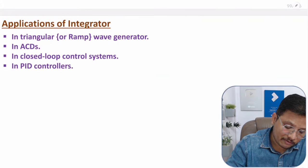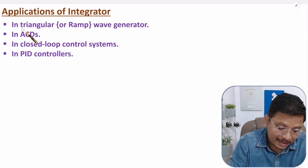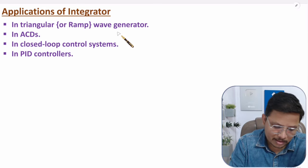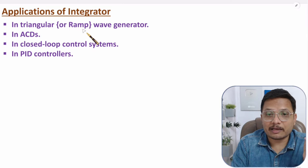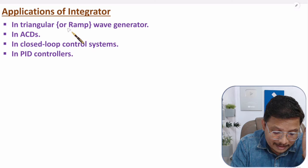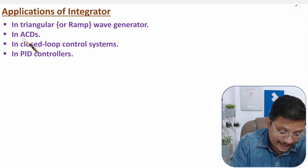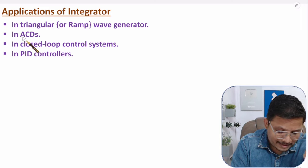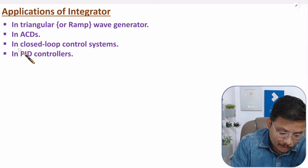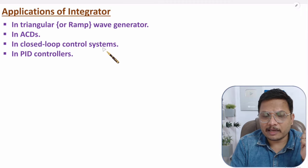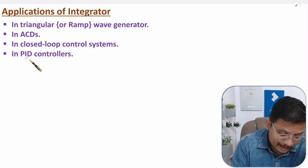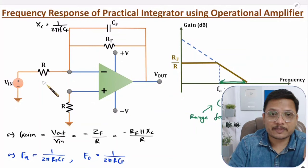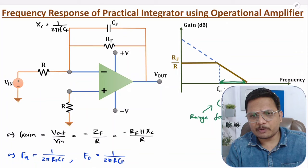Now let us discuss applications of integrator. An integrator can be used for triangular wave generation — if the input is a square wave, the output will be a triangular wave. An integrator can also be used for ramp generation — if the input is a DC signal, the output will be a ramp signal. In ADCs (analog-to-digital conversions), integrators are used. In closed-loop control systems, integrators are also used — for example, in PID (proportional-integral-derivative) controllers, where the integral controller can be designed using this type of circuit.